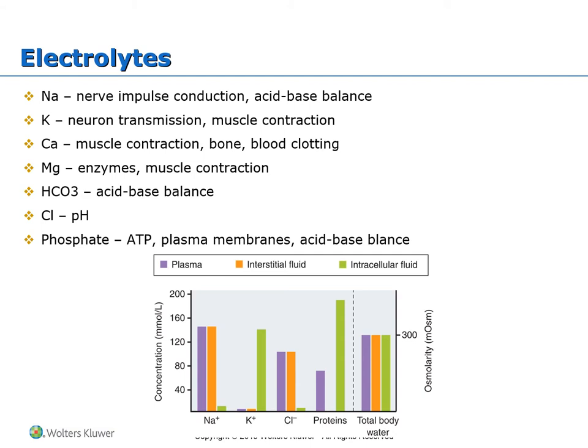The second component of body fluids is electrolytes. They serve many roles in body functions and can be separated into two categories: those with a positive charge (cations) and those with a negative charge (anions). The most abundant cation in the extracellular fluid is sodium, whose main role is to maintain osmotic balance and body fluid volume, as well as nerve impulse transmission and acid-base balance.